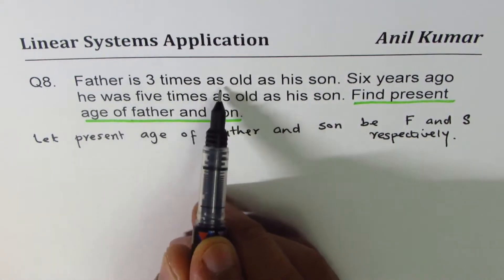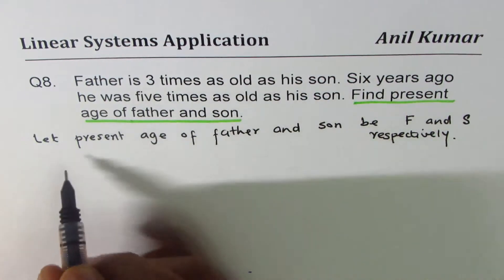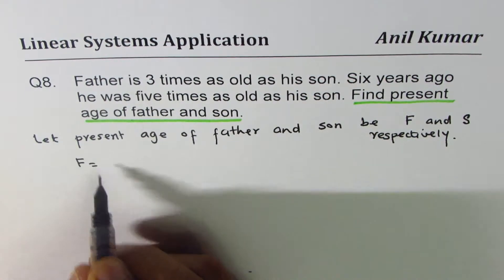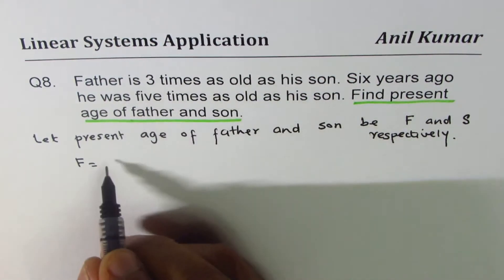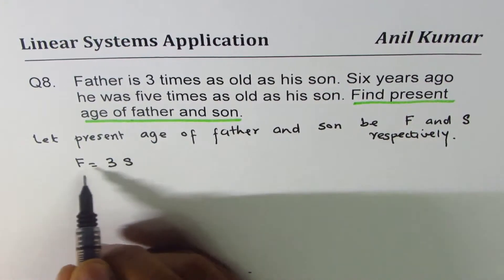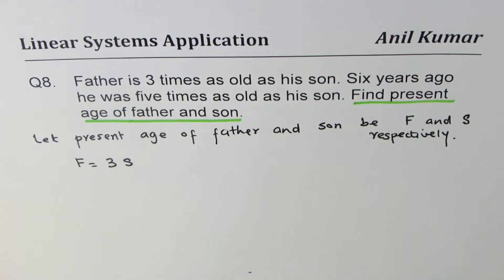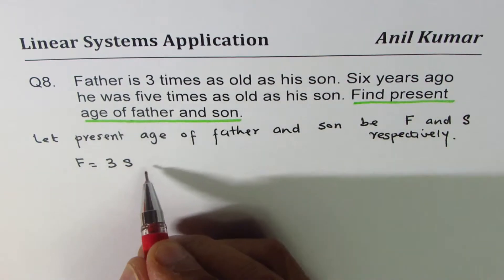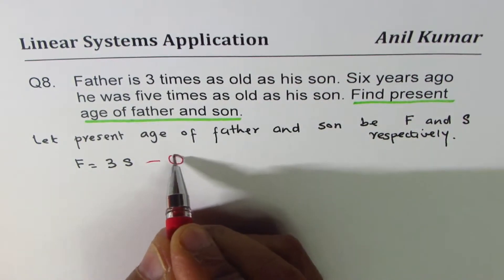Father is three times as old as his son. That means father is, there is F, three times means three times S. That's the first equation. So we get one of our equations. Father is three times as old as his son.